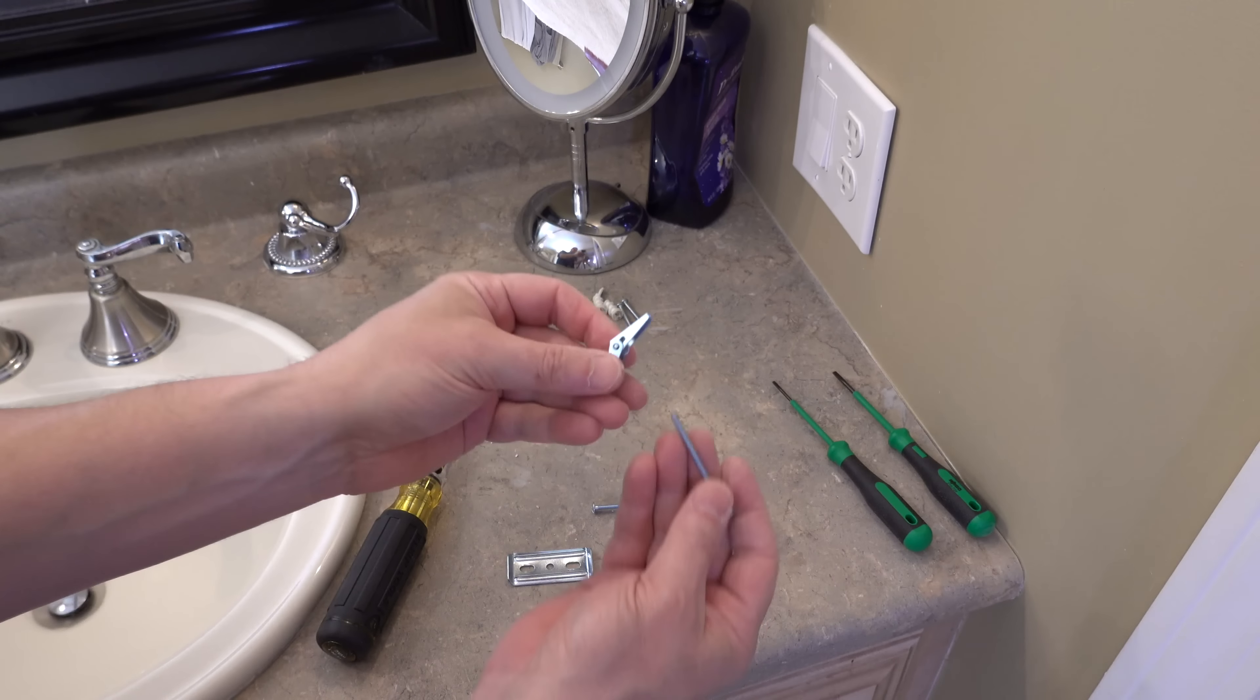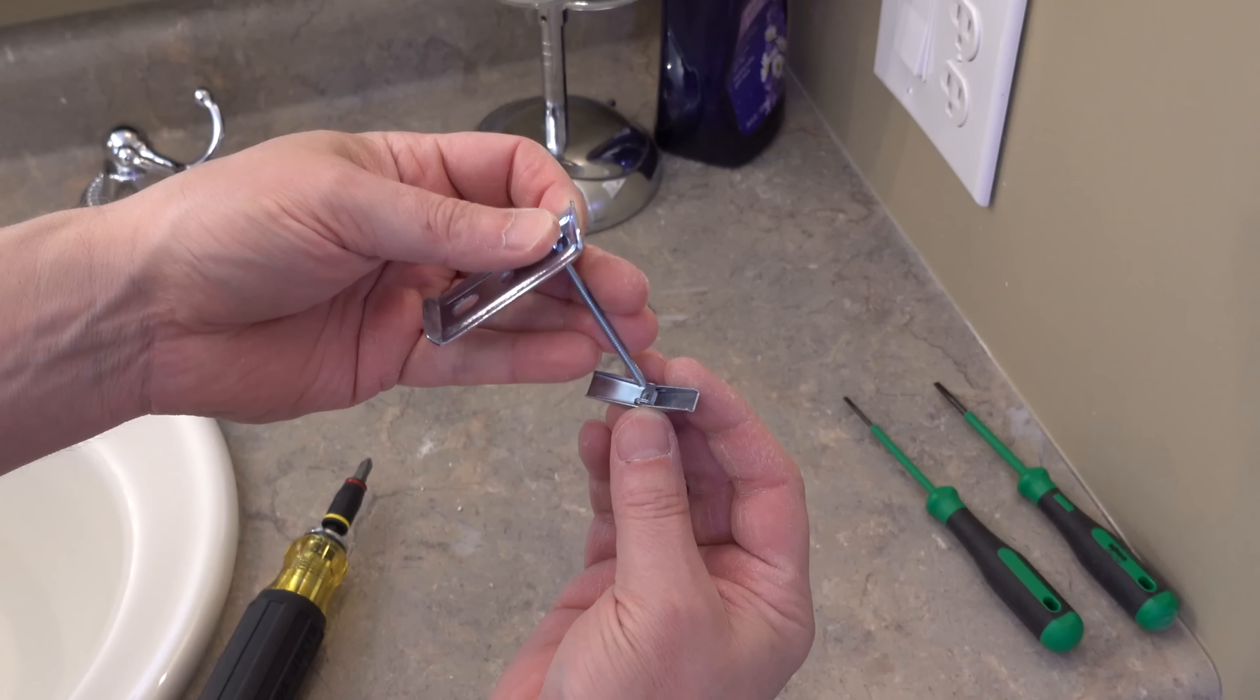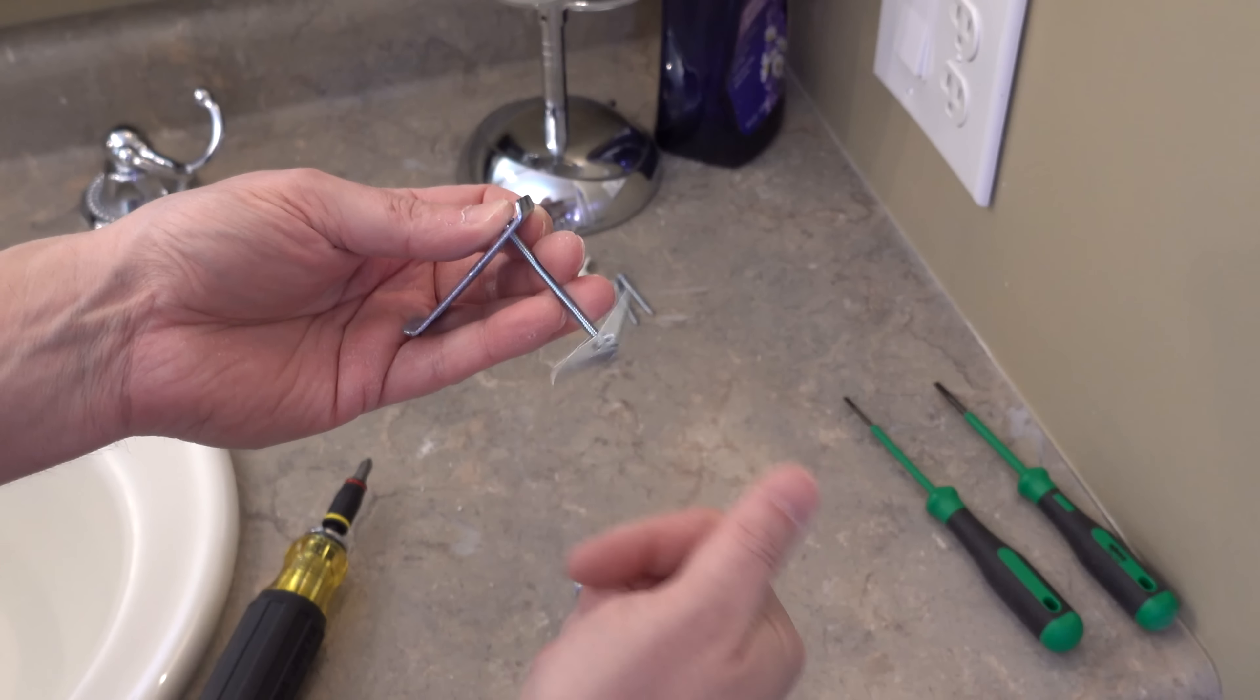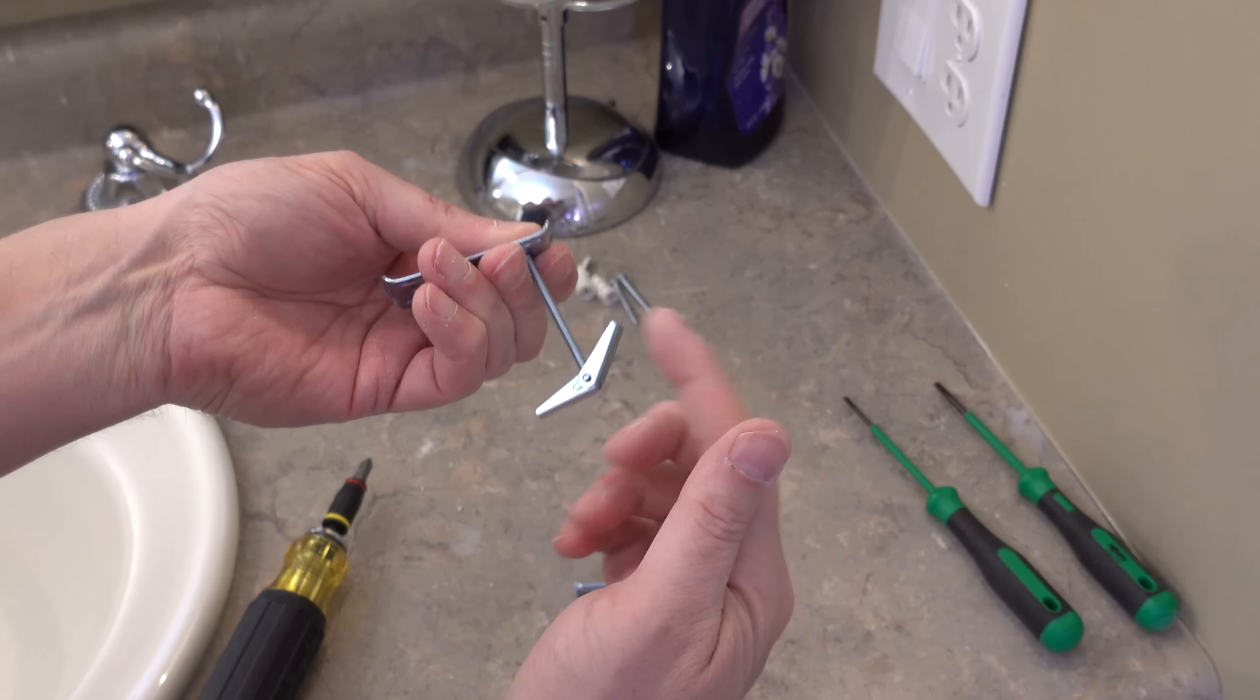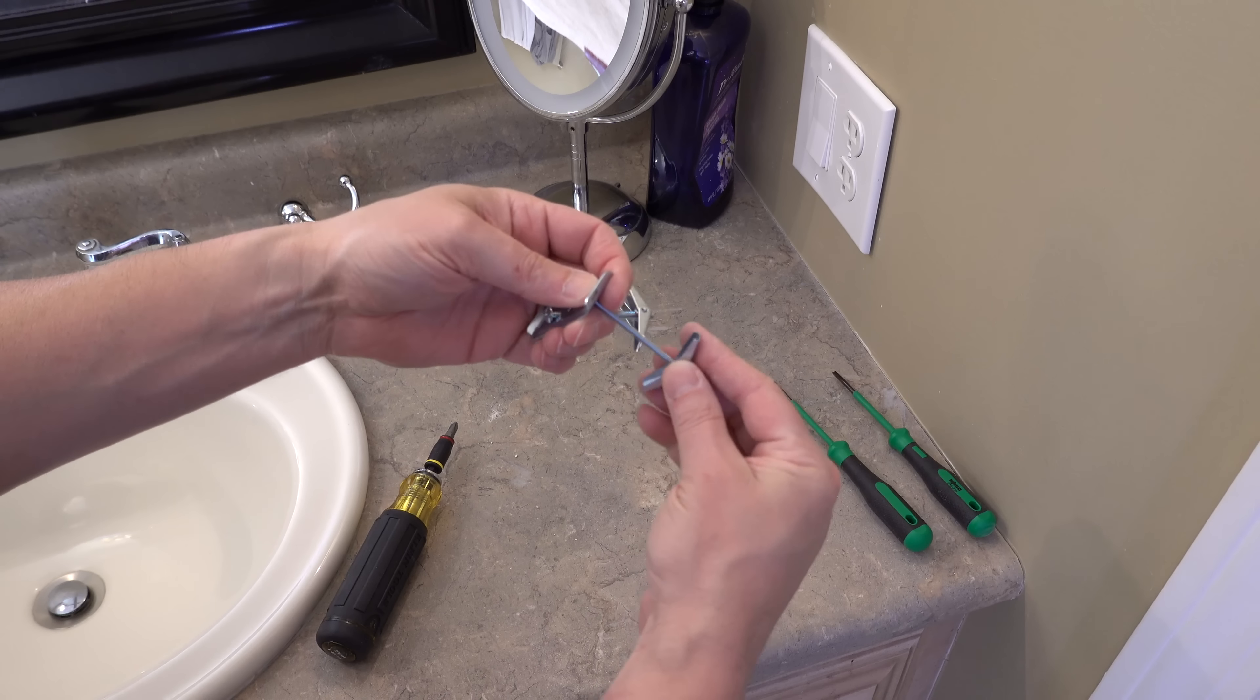Using the toggle bolts is easy but it starts by removing those small wings. Then insert the screw through the hole in your existing bracket and then re-screw those wings onto the end. You want to make sure that the wings are pointing towards the hole you're going to be inserting them into. And since this bracket is using two screws you're just going to repeat the process for the other hole.